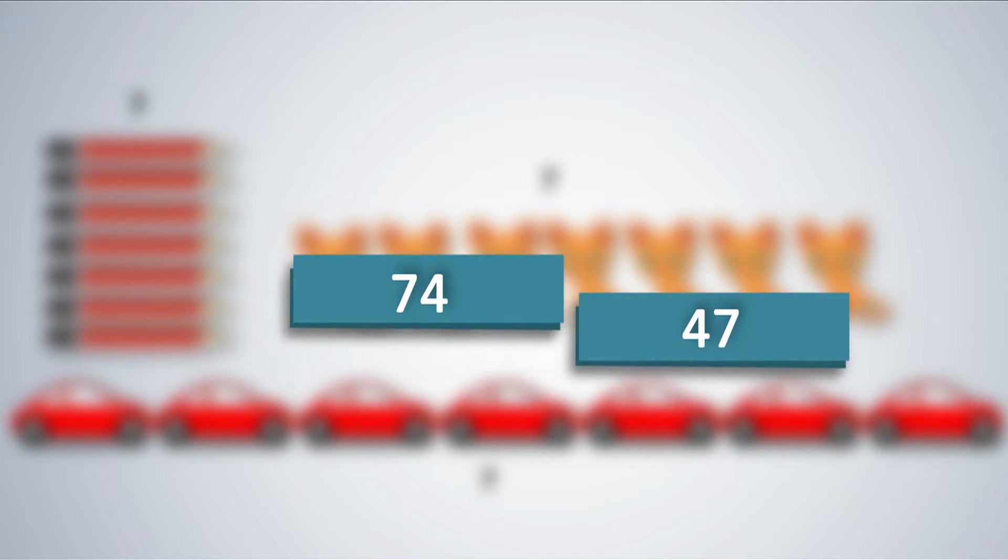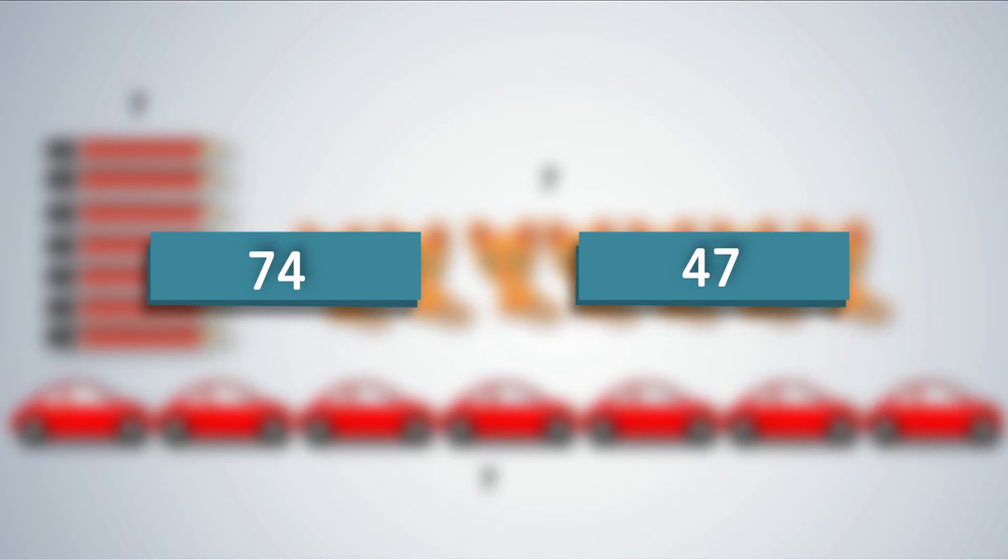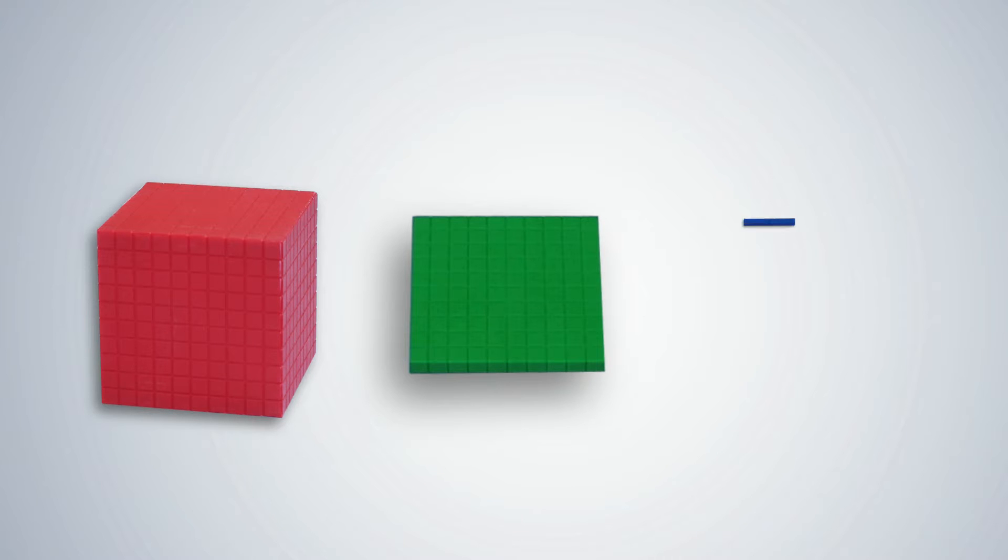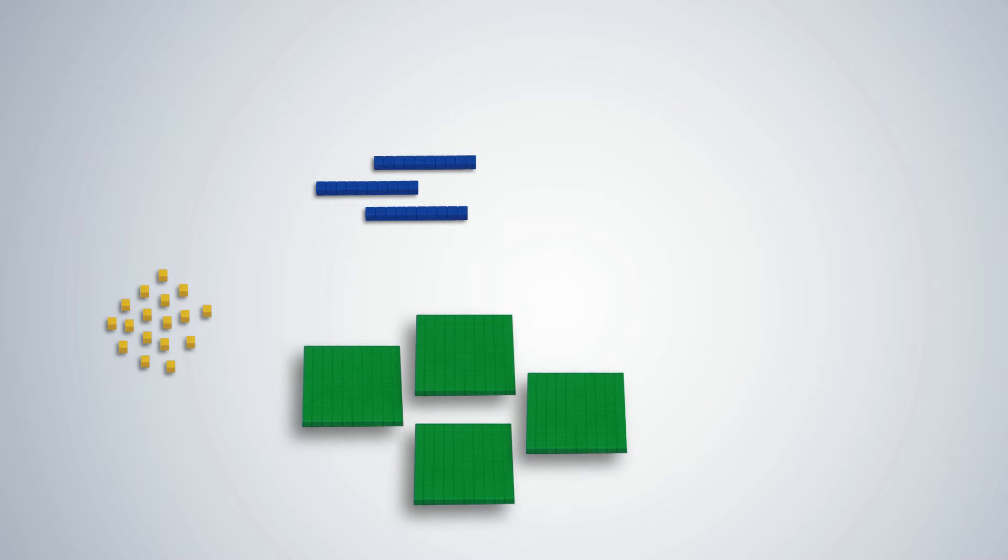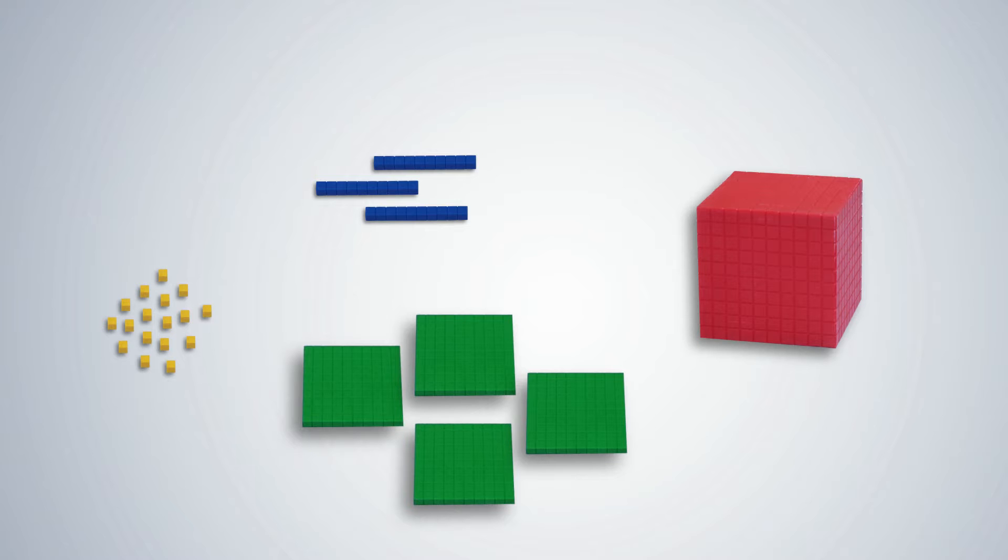For example, how is 74 different from 47 even though the digits are the same? Show students the base 10 blocks and introduce them to the rule of grouping by 10. Yellow cubes represent 1s or units, blue rods represent 10s, green plates represent 100s, and the red cube represents 1000.